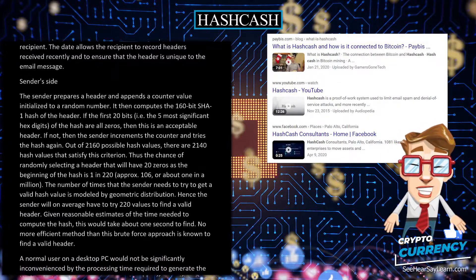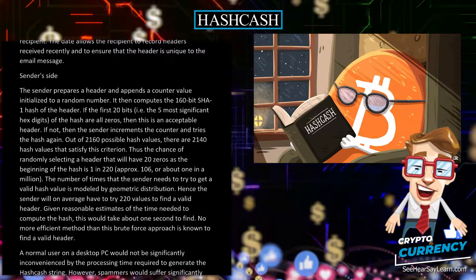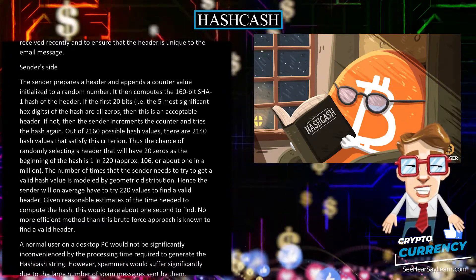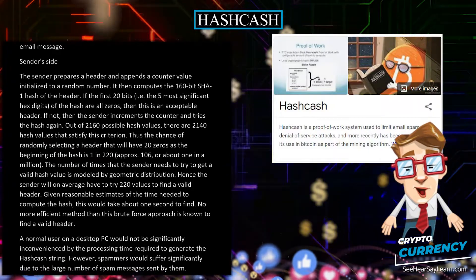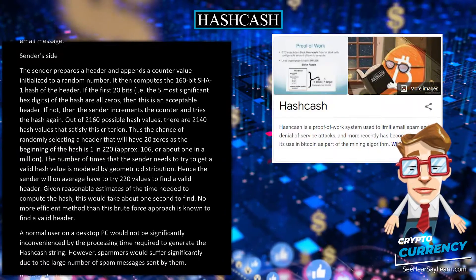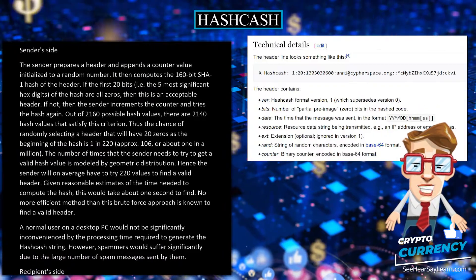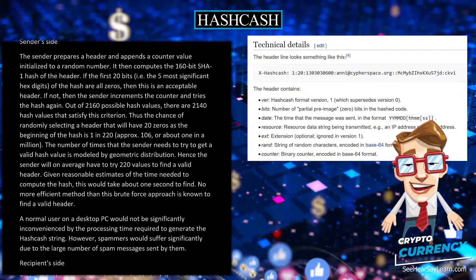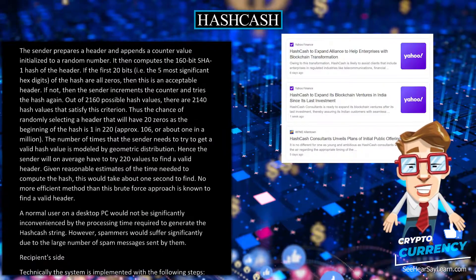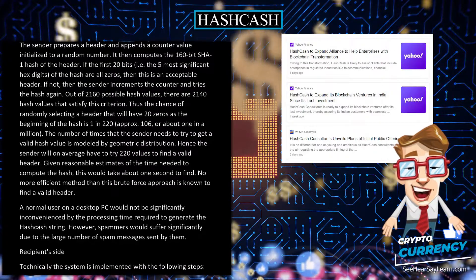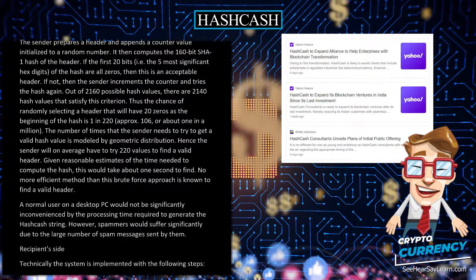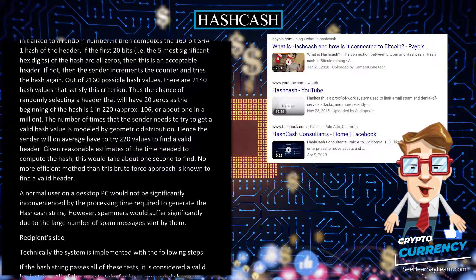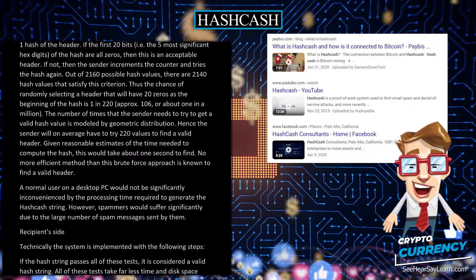The chance is approximately 1 in a million. The number of times the sender needs to try to get a valid hash value is modeled by a geometric distribution. Hence the sender will on average have to try 2^20 values to find a valid header. Given reasonable estimates of the time needed to compute the hash, this would take about one second to find. No more efficient method than this brute force approach is known to find a valid header.